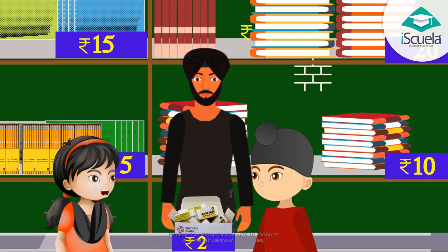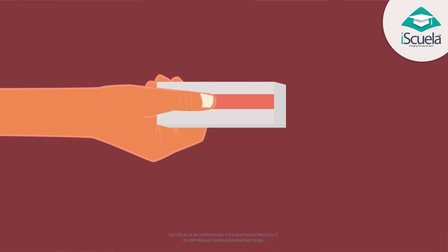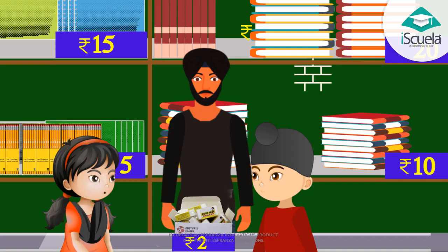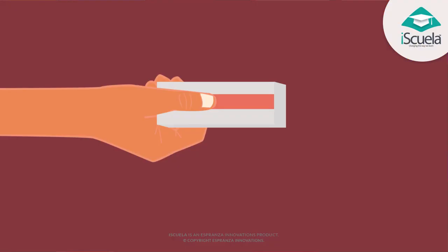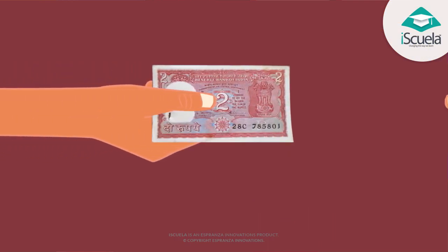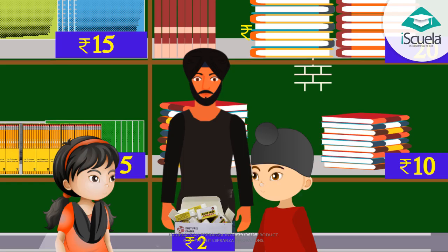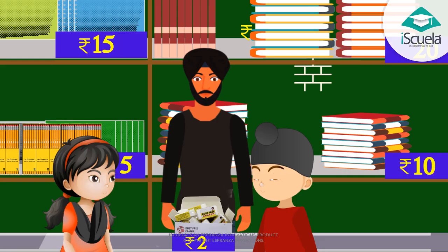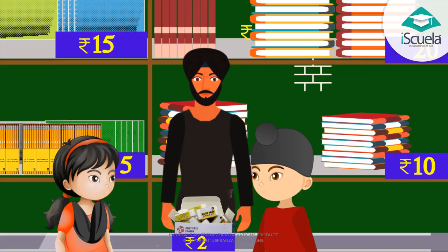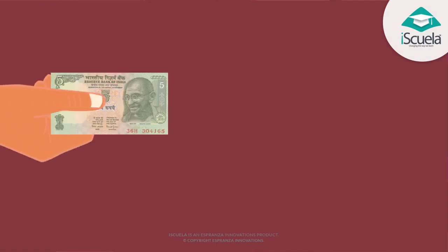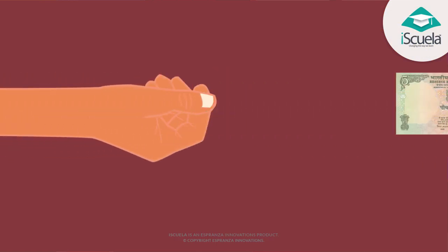Uncle, can I have an eraser please? Here it is, my child. Uncle, what is its cost? It costs Rs. 2. Uncle, here is the Rs. 2 note. Can you give me a pencil too? Yes my child, here it is. What is the cost of this pencil? It costs Rs. 5. Uncle, here is the Rs. 5 note.